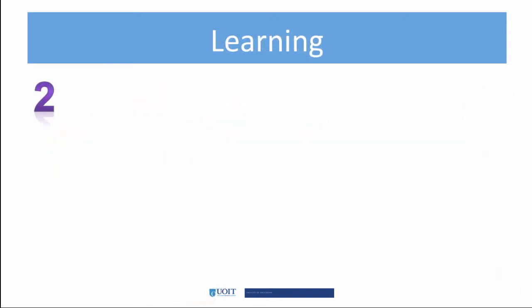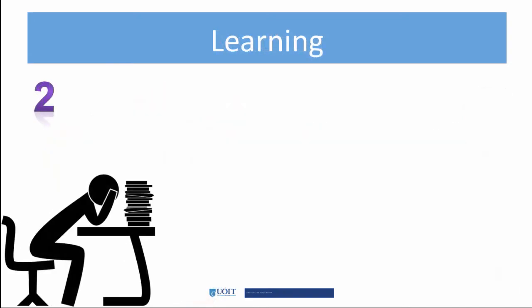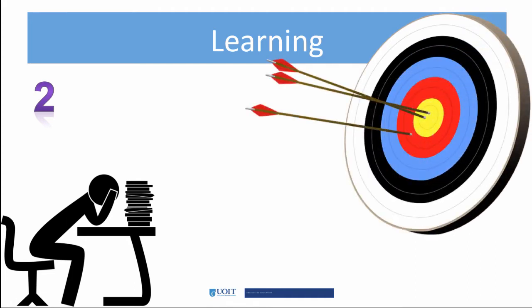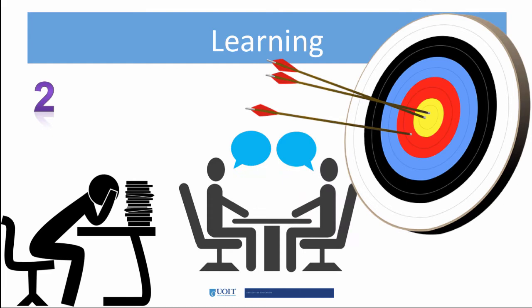The second level is learning. This level measures what participants actually learned compared to what they were supposed to learn, and is best measured against the learning objectives. It typically measures the increase of knowledge obtained through the training program. To accurately measure this, benchmark data should be gathered for comparison purposes. This tends to be fairly easy when knowledge can be quantified or technical skills are measured, and such information is gathered through interviews or observations before and after attending training.